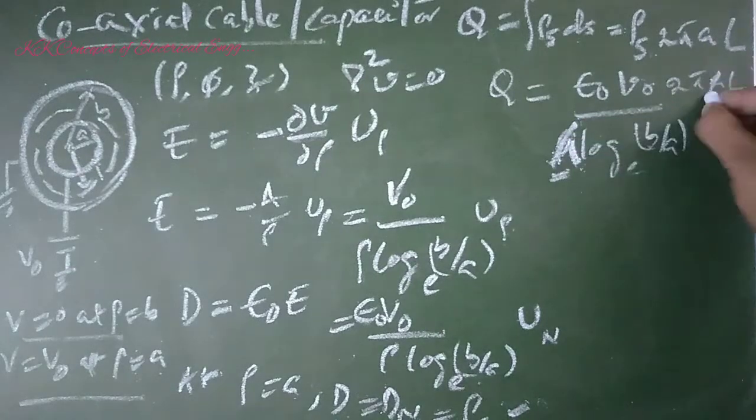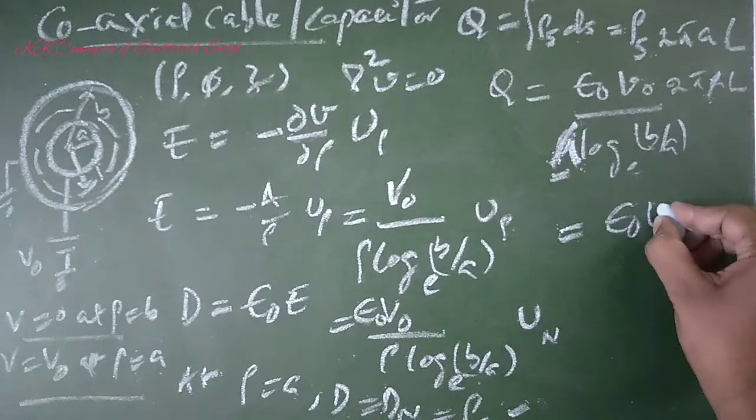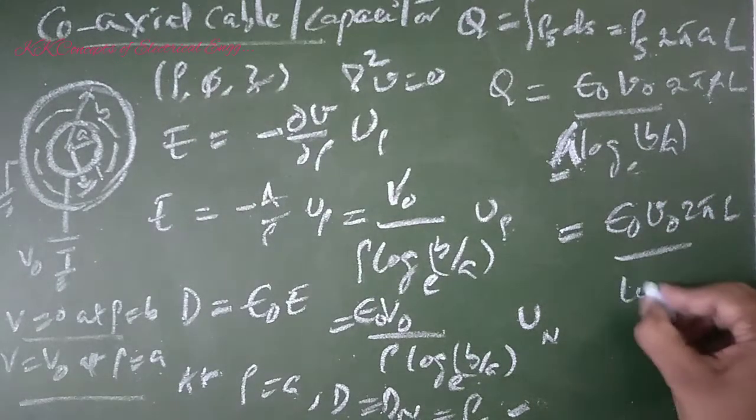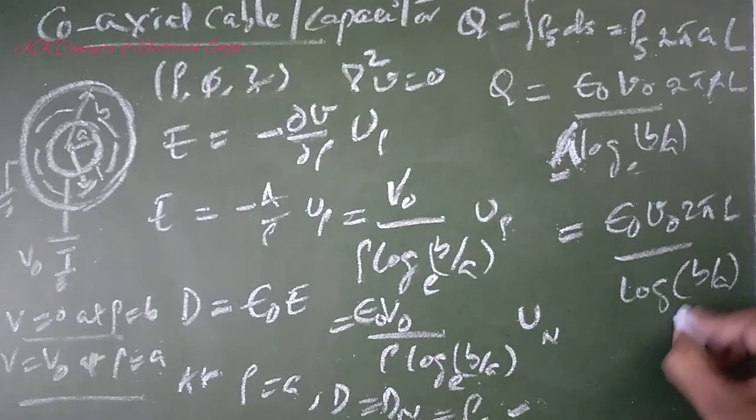A gets cancelled, then you get Q equals ε₀V₀ 2πL divided by log(B/A).